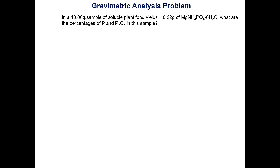In this lab, you'll measure out a certain amount of fertilizer, dissolve it in water, add magnesium sulfate heptahydrate and some ammonia, and form a product called magnesium ammonium phosphate hexahydrate. From this, we'll determine the actual percent P — the actual phosphorus in the sample — and the percent P₂O₅, which is the reported phosphorus. The percent P₂O₅ should be very similar to the phosphorus percent in the NPK ratio.